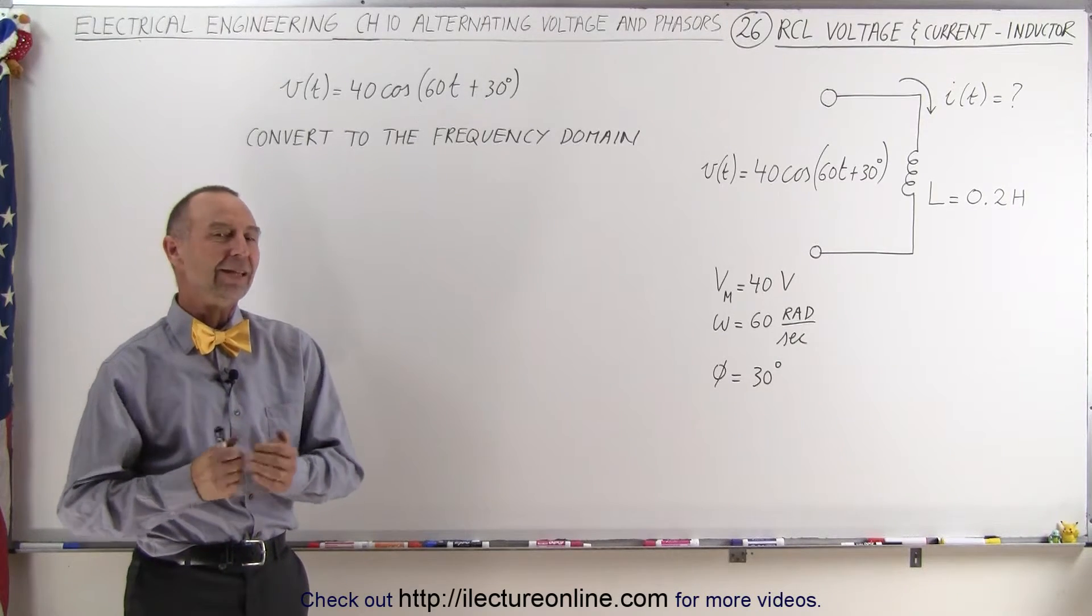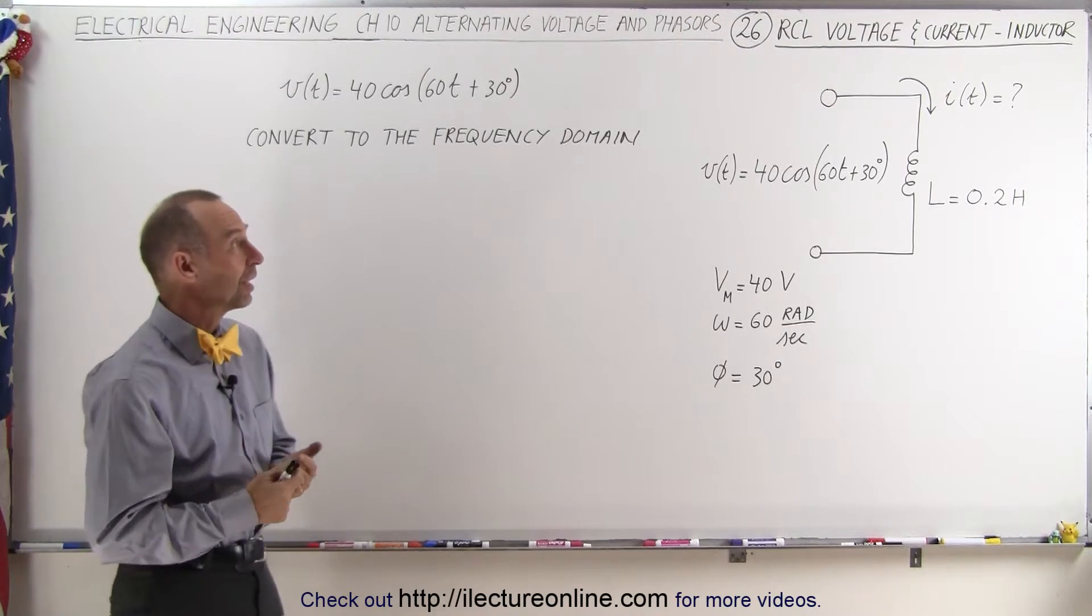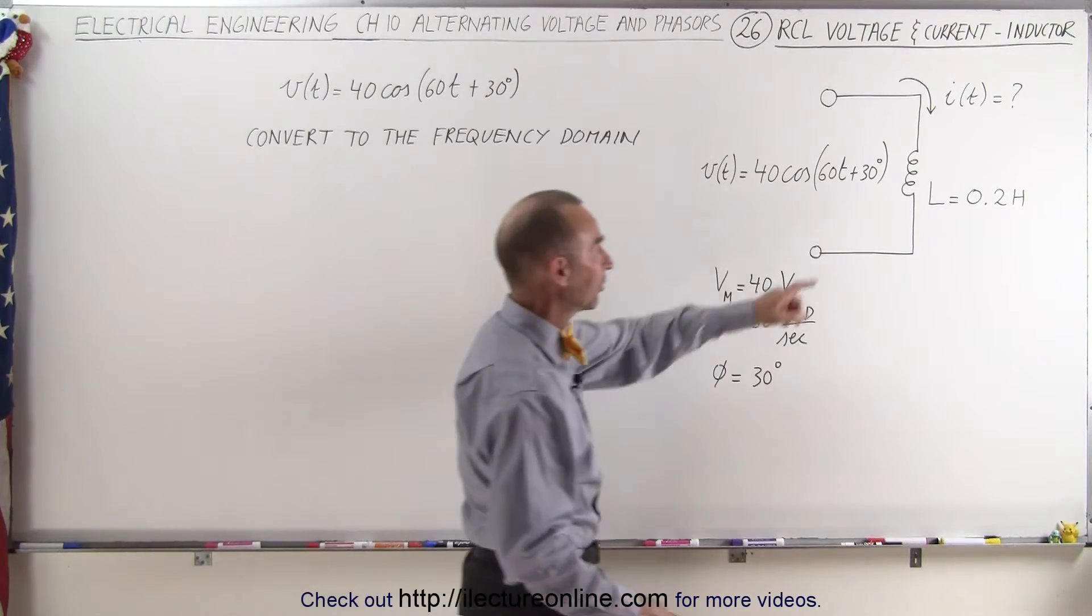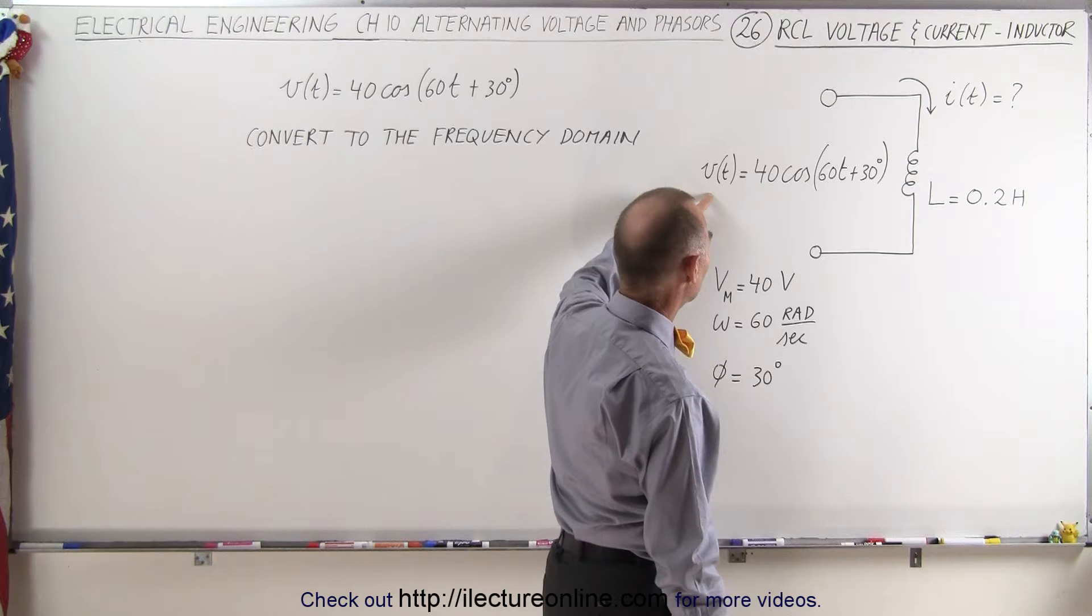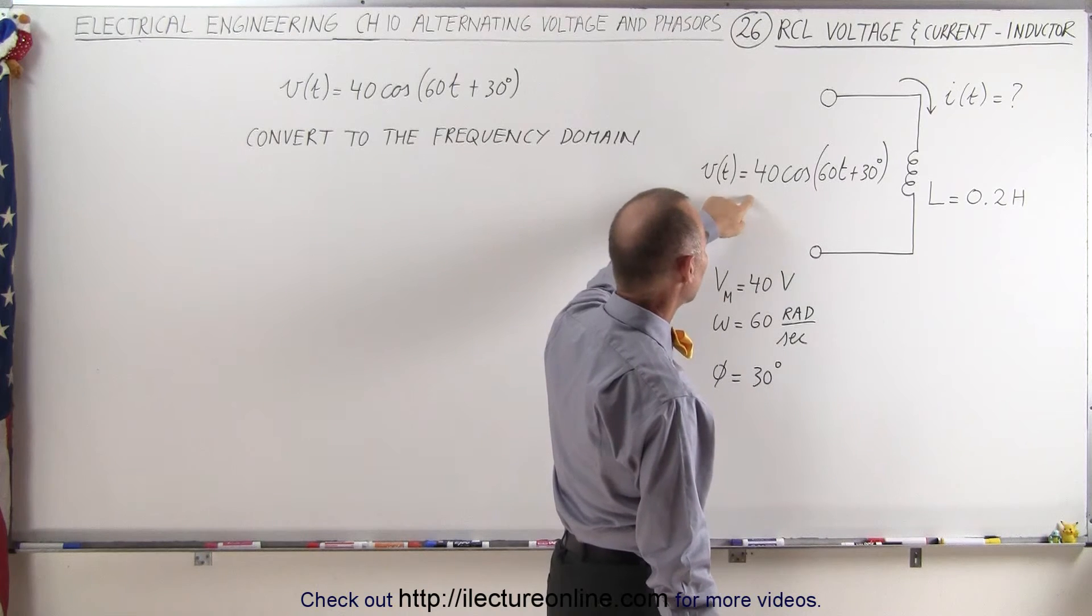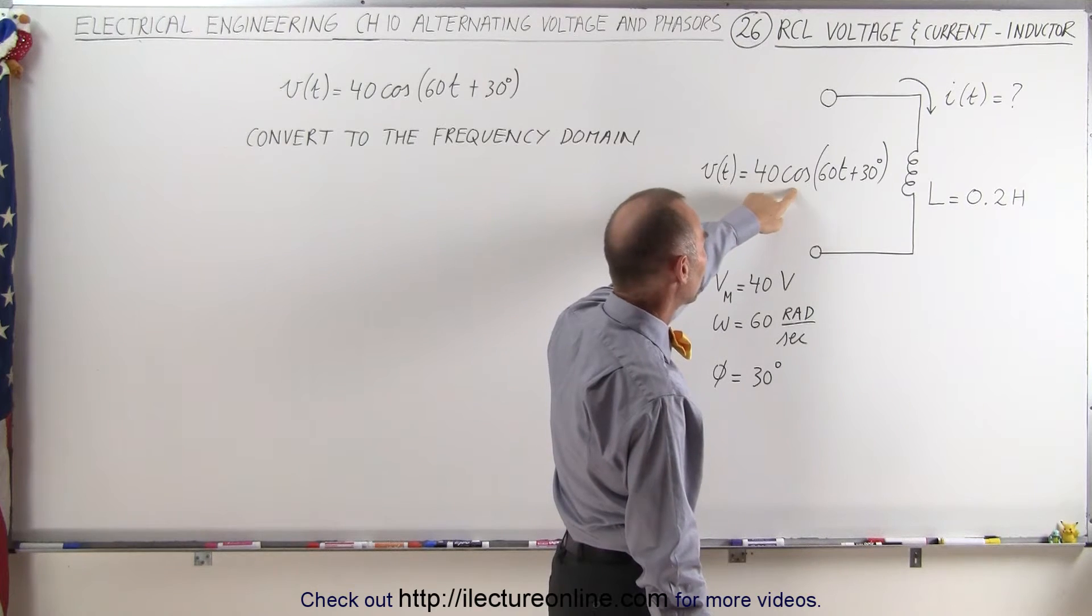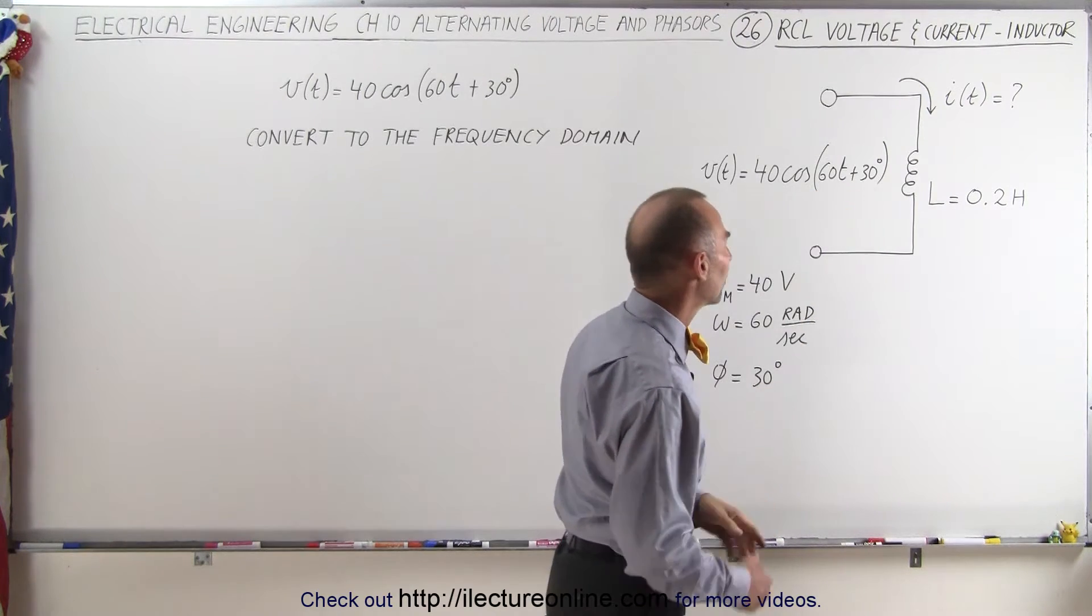Welcome to our lecture online. Now let's try to use what we've learned in the last few videos. Here we're given a very simple circuit, an inductor. We drive a voltage through the inductor. The voltage is time varying, it has a maximum voltage of 40 volts, and the function is the cosine of 60t plus 30 degrees.